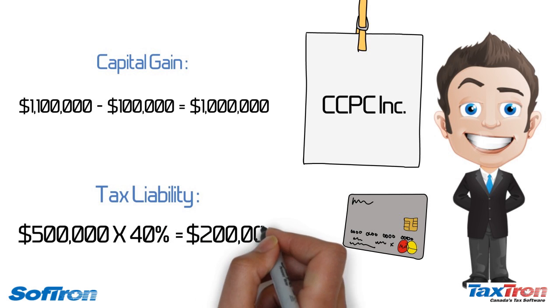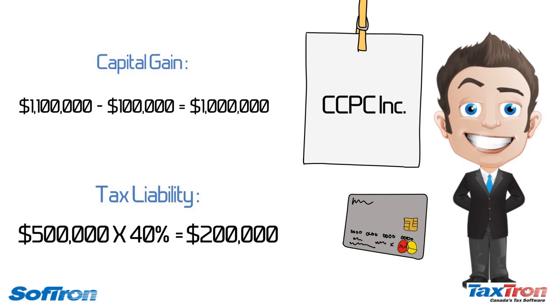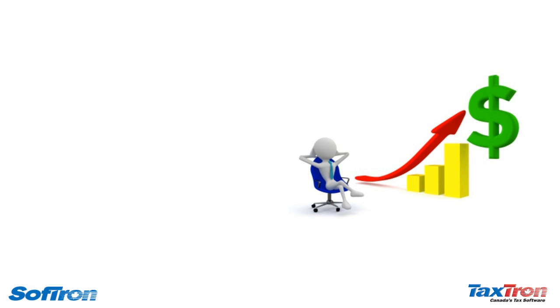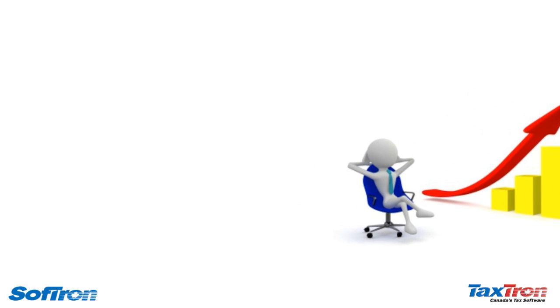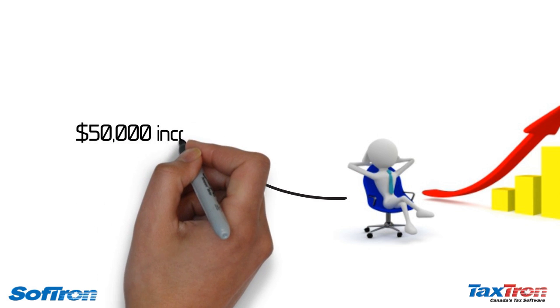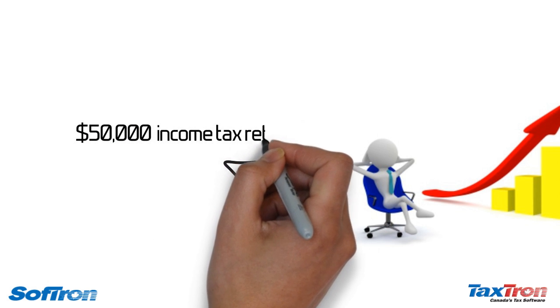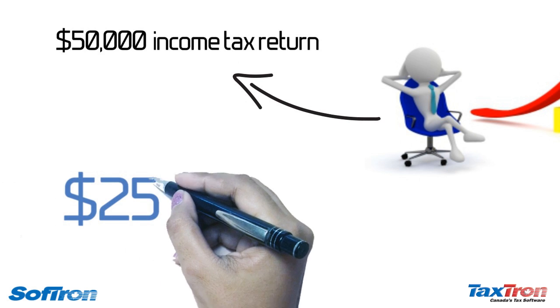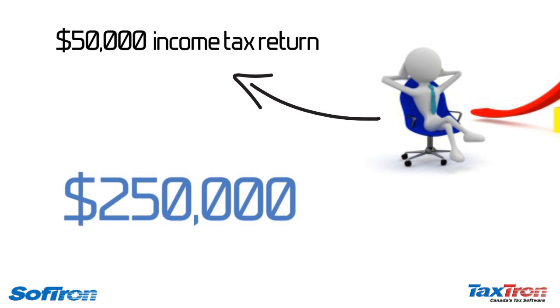CCPC, Inc. will pay $200,000, assuming a tax rate of 40%. The remaining $300,000 will be paid to Charles as dividend income. After applying the dividend tax credit, Charles will pay another $50,000 on his personal income tax return. So the total tax paid in this case is $250,000, too.